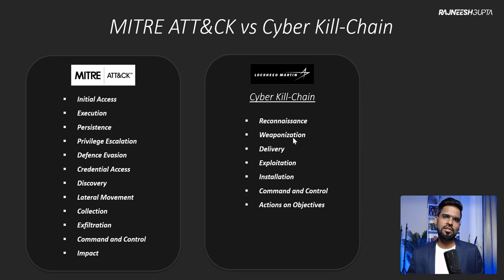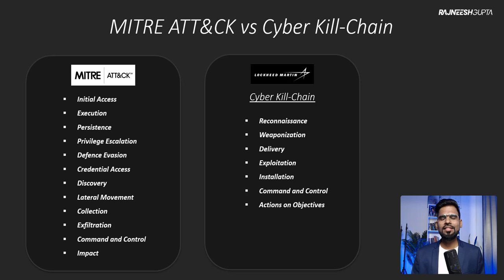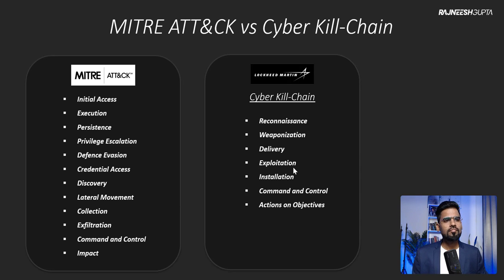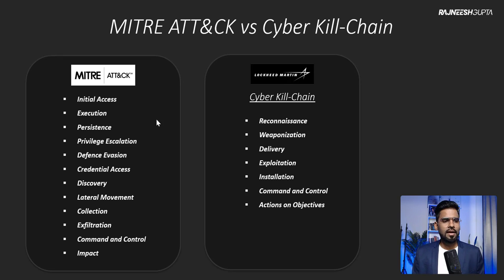In the Cyber Kill Chain, there are limited phases from the attacker's point of view: reconnaissance, where the attacker performs active or passive scanning; weaponization, where they build their payload and exploits; delivery, where payloads are sent through mechanisms like phishing or spear phishing; then exploitation. There is also installation and command and control — we have detailed sessions on each of those phases.